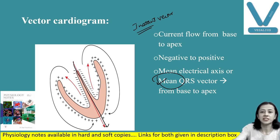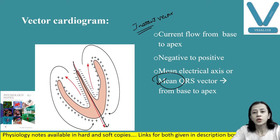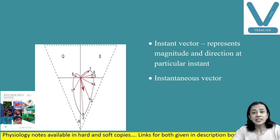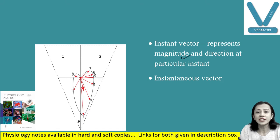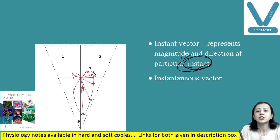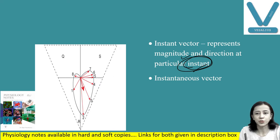This is the vector cardiogram. The instantaneous vector represents magnitude and direction at a particular instant during cardiac activity.